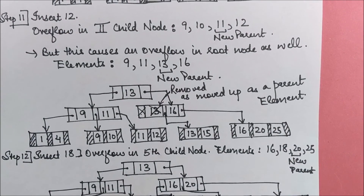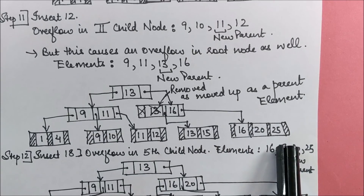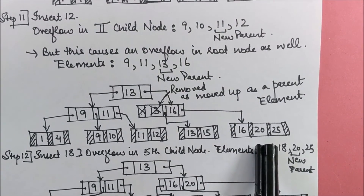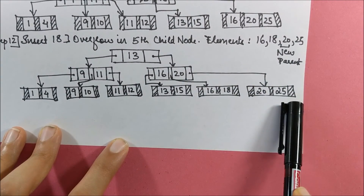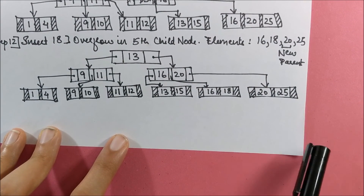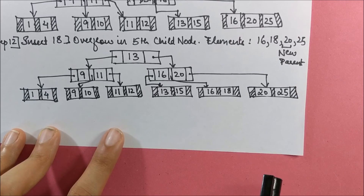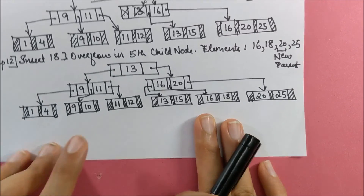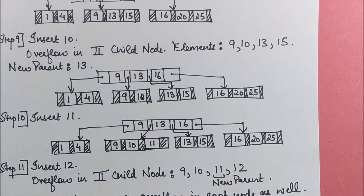Next, insert 18: since 18 is more than 16, it is placed in the rightmost leaf. Overflow occurs there, so a split occurs and the tree updates accordingly. That completes the insertion in a B+ tree with an even branching factor. In the next session, I will cover the case of an odd branching factor. Thank you, stay tuned.